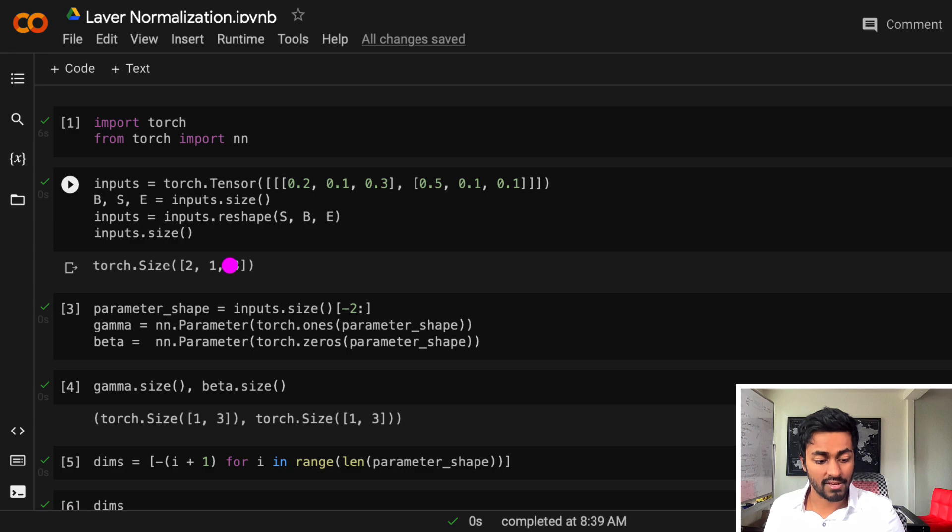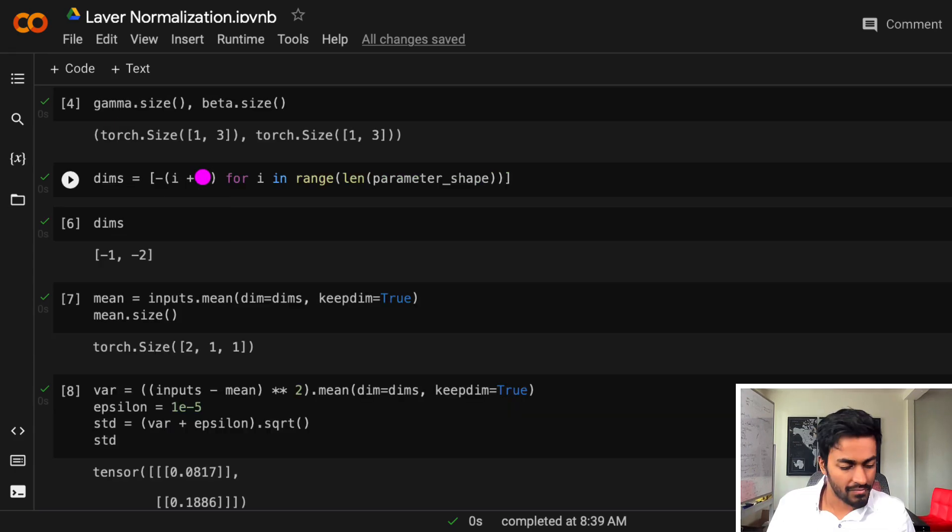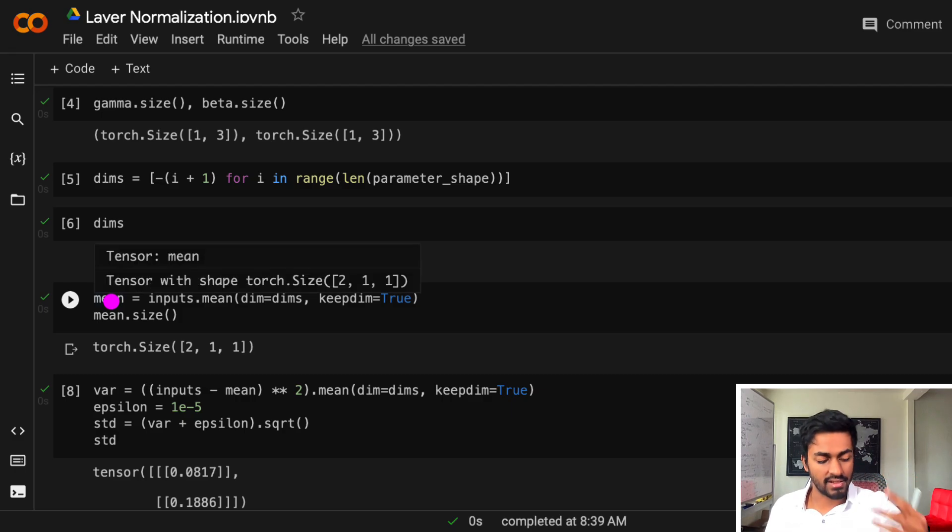But layer normalization is essentially going to be computed across the layer and also the batch, just for your reference. So in this case, that's kind of why we see 1 by 3 dimensional matrices. Otherwise, we would have just seen just 3 dimensional vectors for gamma and beta. And we're going to initialize gamma to be the standard deviation, which is just ones, whereas betas are just going to be a bunch of zeros. Now I'm basically computing the dimensions for which we want to compute layer normalization. That is the batch dimension as well as the embedding dimension. And it's the last two layers. And now we'll just take the mean across the batch dimension and the layer dimension, and we're going to end up with a 2 x 1 x 1 tensor.